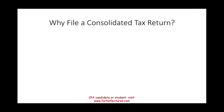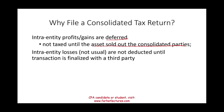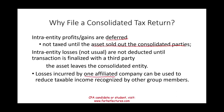Why file a consolidated versus a separate return? We'll look at different scenarios later, but simply put: if you have intercompany profit or gains, they are deferred — meaning they are not taxed until the asset is sold outside of the consolidated parties. If you have inter-entity losses, those are also not deductible until the transaction is finalized with a third party and the asset leaves the consolidated entity. The good thing is losses incurred by one affiliate may be used to reduce the taxable income from another affiliate — gains and losses can offset each other amongst themselves.